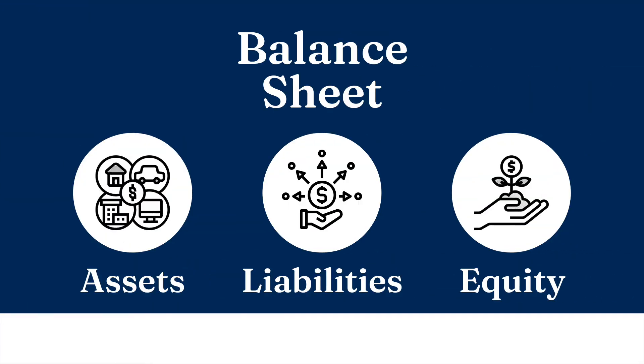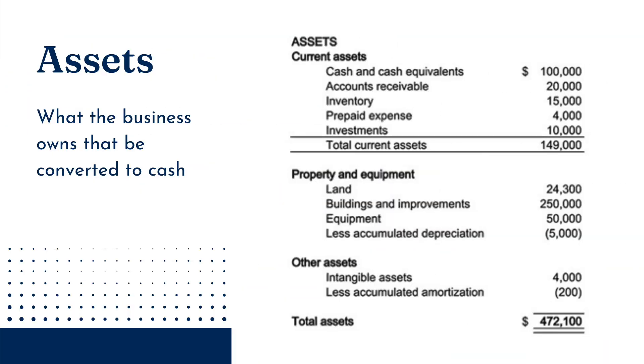Now, as I mentioned before, the balance sheet consists of three sections: assets, liability, and equity. So let's dive into each component a little bit more. Our first section is assets. Basically, an asset is something your business owns that can be converted into cash — for example, if something was sold.